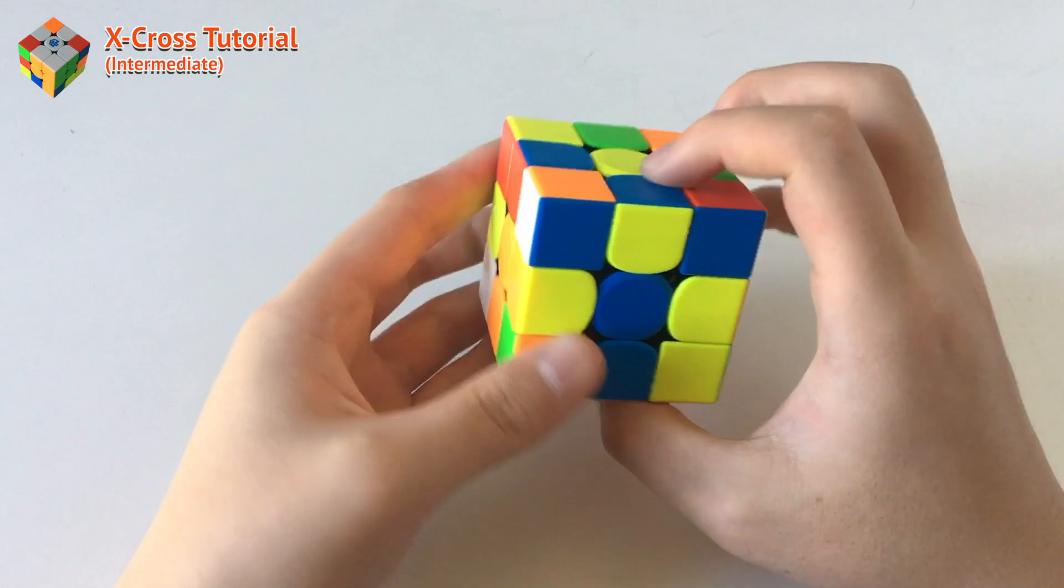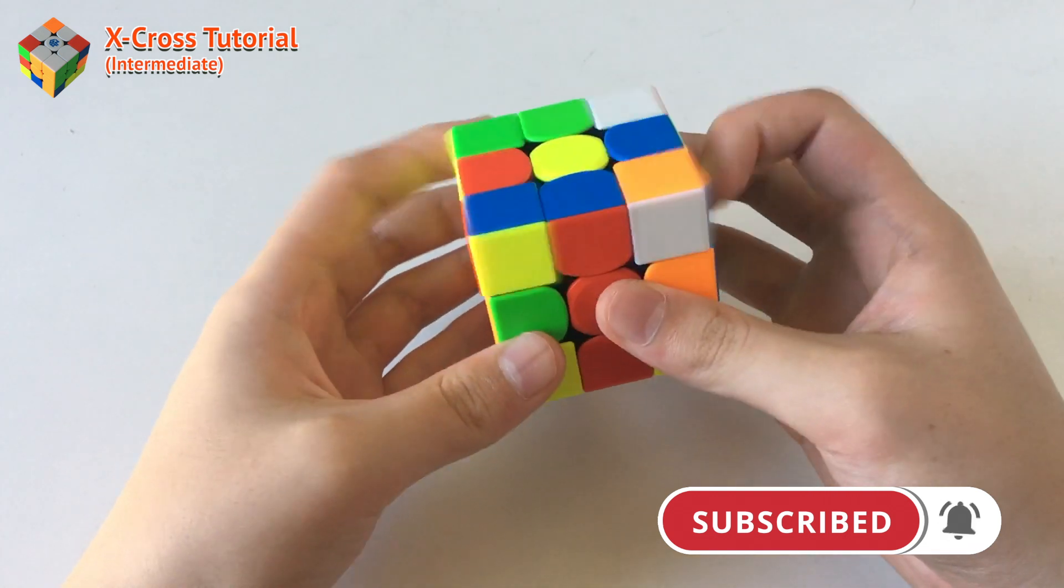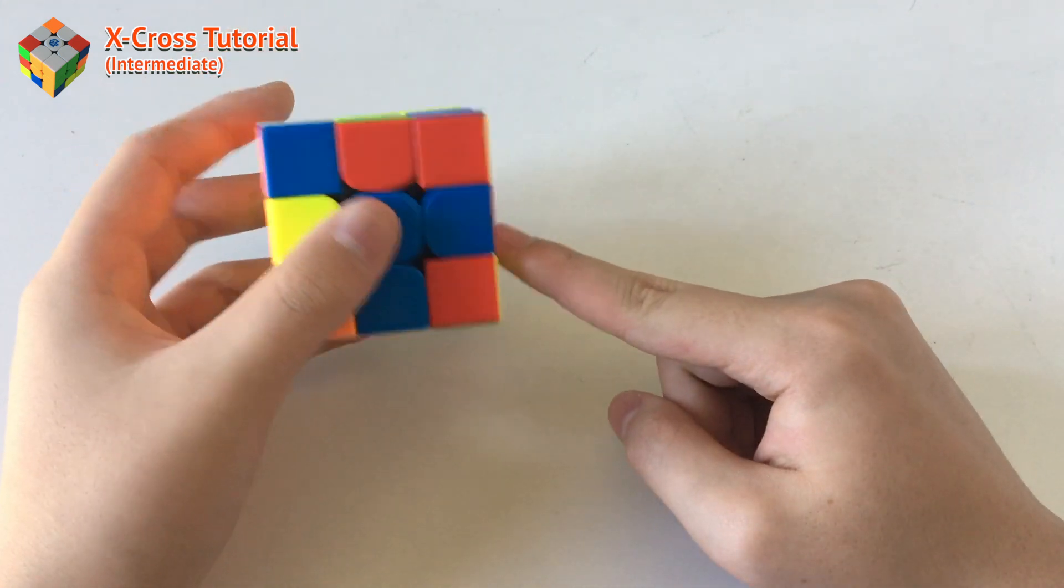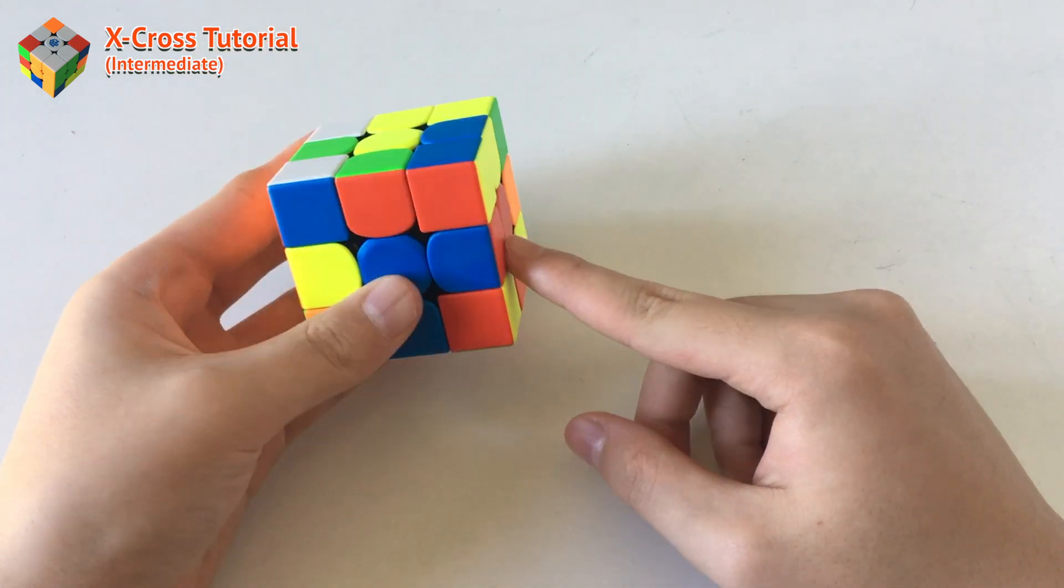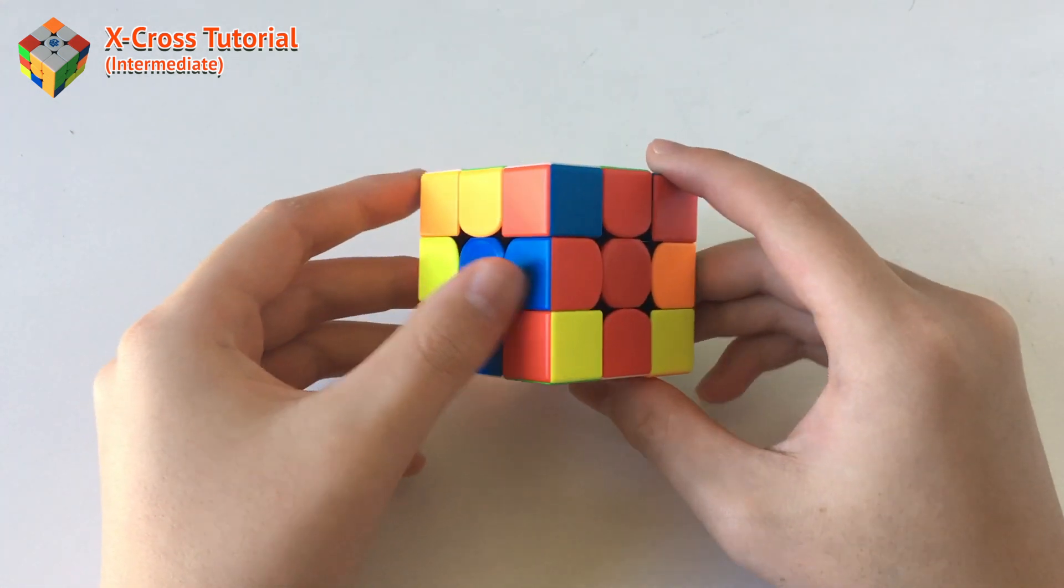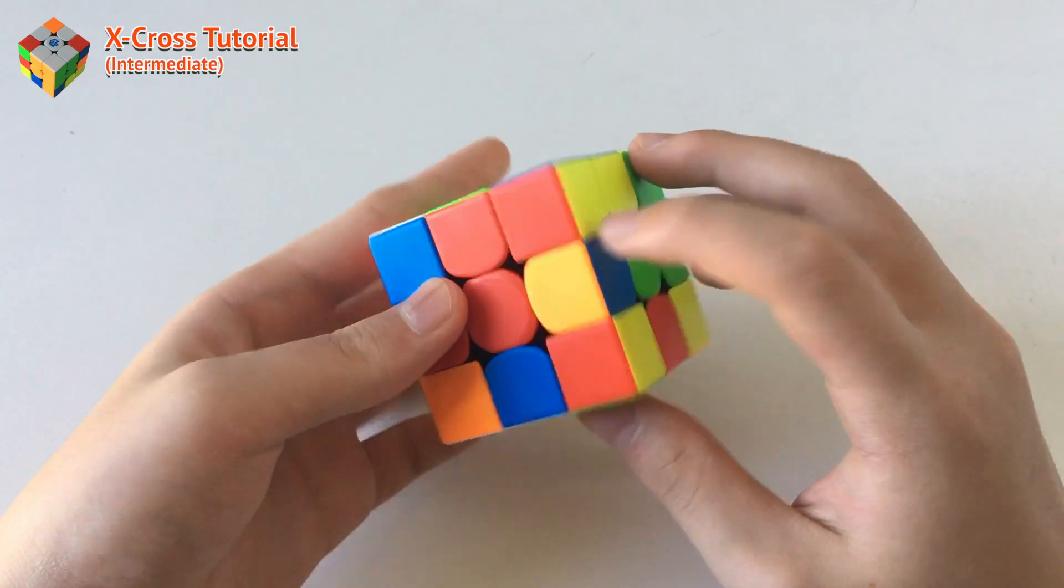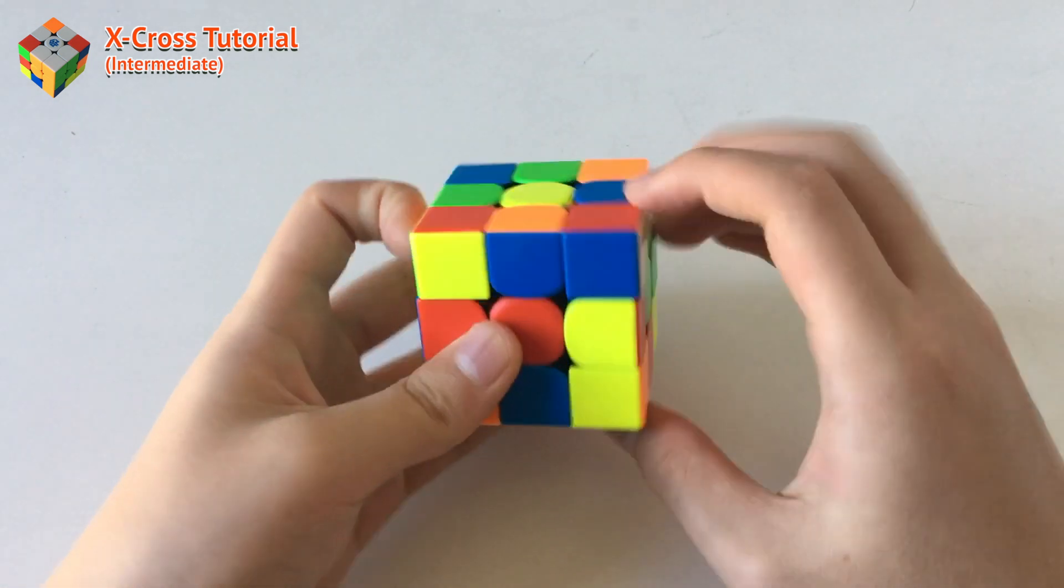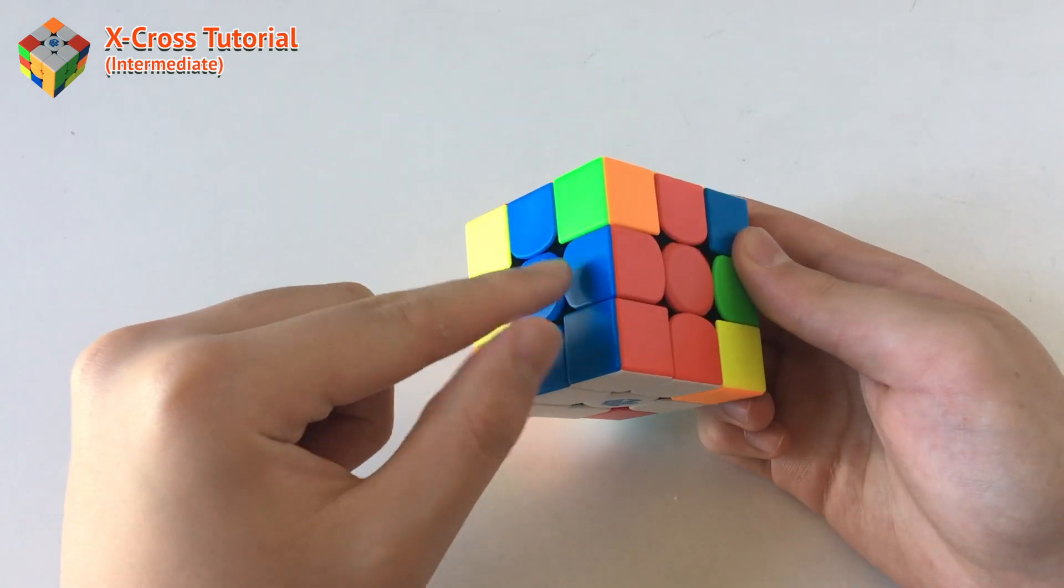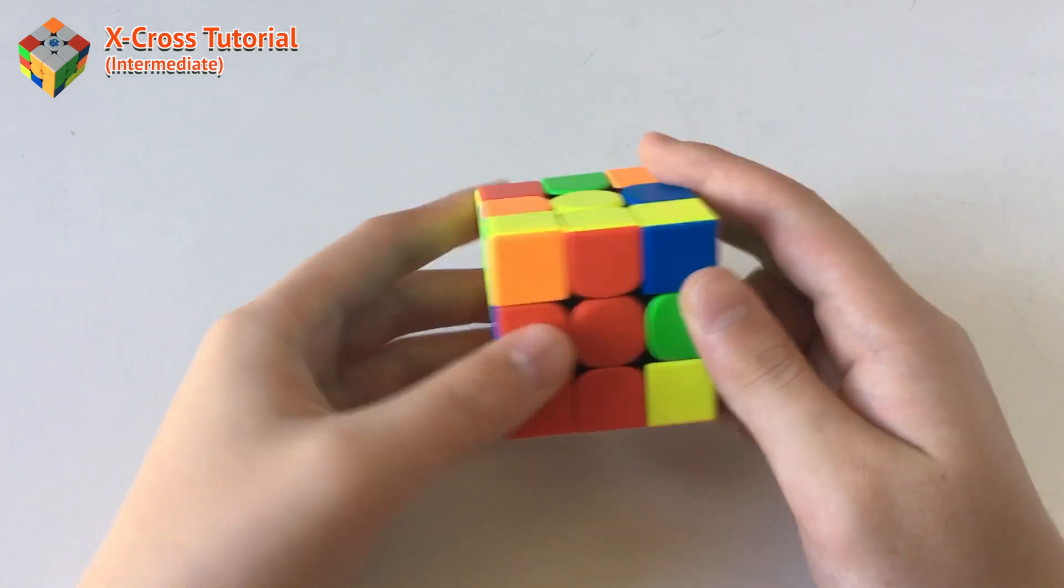So this is an example of a great x-cross case. What you want to do here, since this piece isn't aligned correctly, is that you could move this piece into somewhere else. For example, here, the piece isn't solved here, which means that you could just insert the piece in here. And then when you move it back, you have this block here, which means that you basically solve the cross and the first F2L pair at the same time.